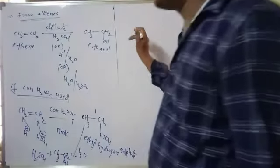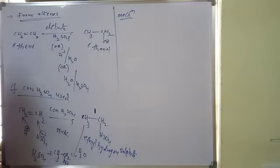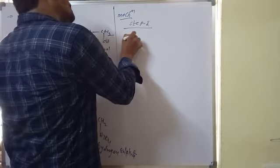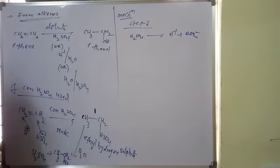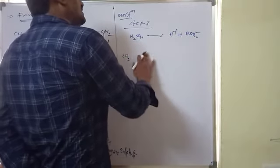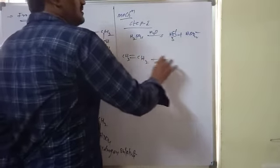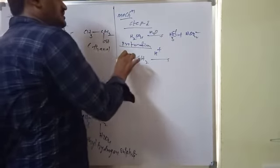Now the mechanism of this reaction takes place in three steps. Step one: sulfuric acid splits into H⁺ and HSO₄⁻. In the presence of water, H⁺ becomes H₃O⁺ (hydronium ion). The H⁺ then attacks the alkene — this is called protonation.